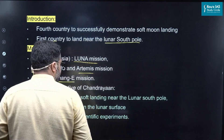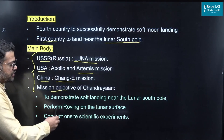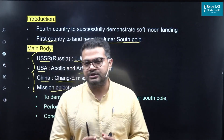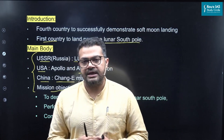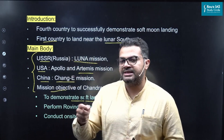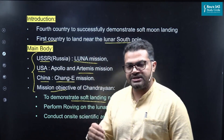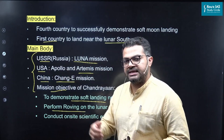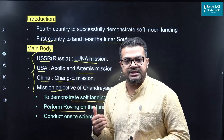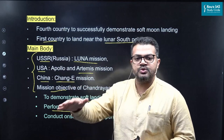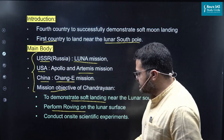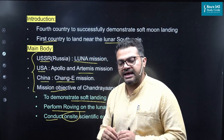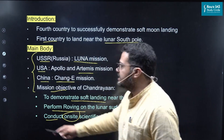The Chandrayaan-3 project has three major objectives. First, to demonstrate soft landing near the lunar south pole — technically stated as 'on the designated lunar site,' which itself is closer to the lunar south pole. Second, to perform roving on the lunar surface: the rover attached in Chandrayaan-3 is essentially a moving cart that travels around the nearby area and conducts certain experiments. Third, to conduct on-site scientific experiments with the help of both the rover and the lander.